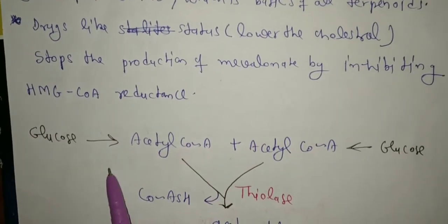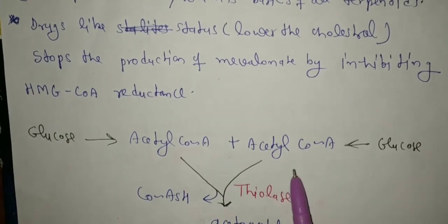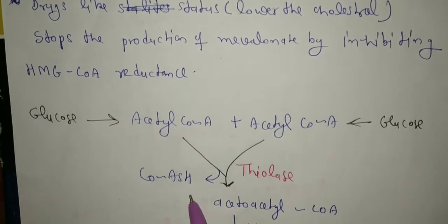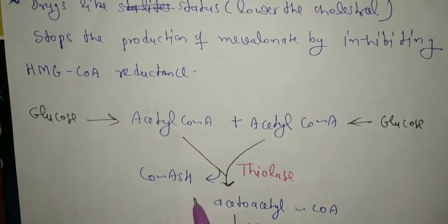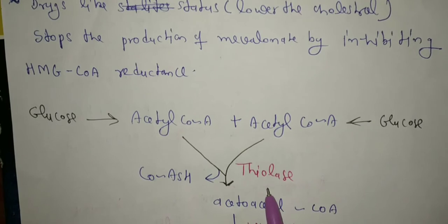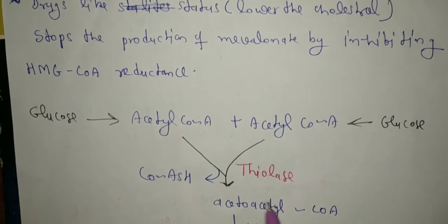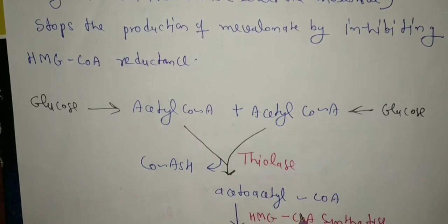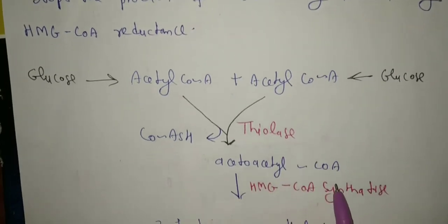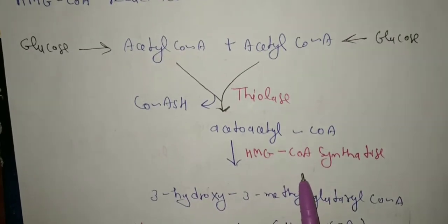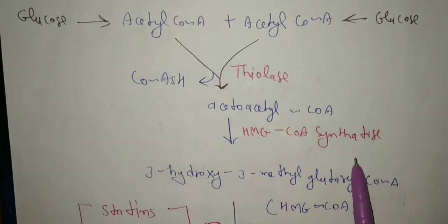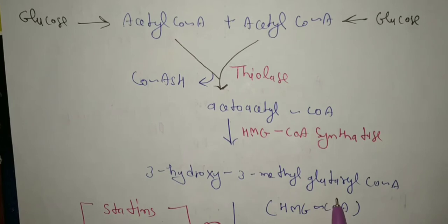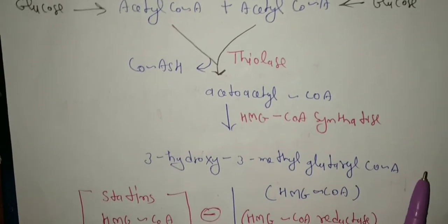Glucose is converted to acetyl coenzyme A. Acetyl coenzyme A, in the presence of coenzyme A, undergoes thiolysis to convert into acetoacetyl coenzyme A. Then HMG coenzyme A synthetase converts it into 3-hydroxy-3-methylglutaryl coenzyme A (HMG-CoA).